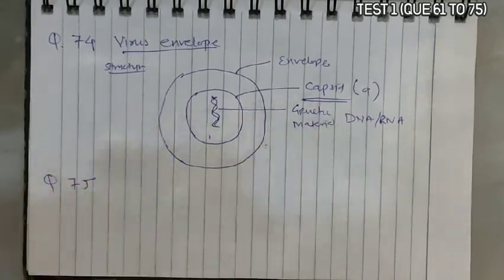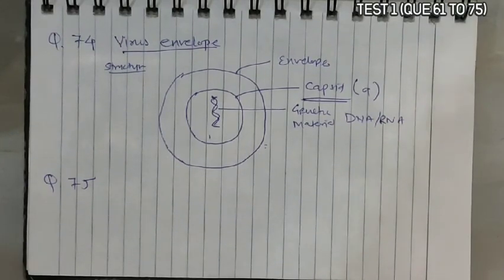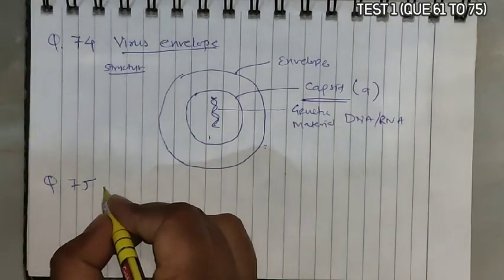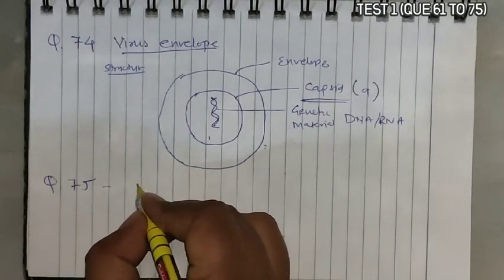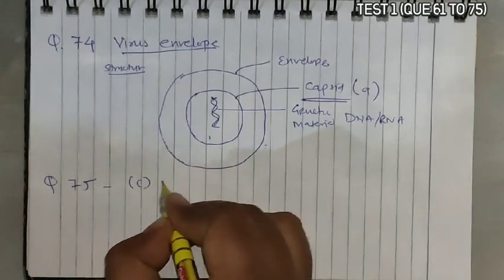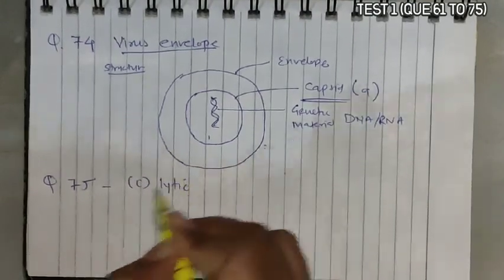Question 75: Viruses that infect bacteria, multiply, and cause their lysis are called bacteriophages. Bacteriophages which kill bacteria by lysis carry out a lytic cycle, and this phenomenon is known as the lytic phenomenon.